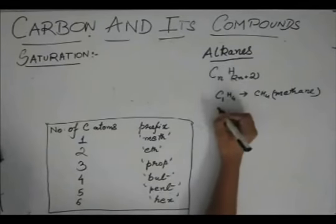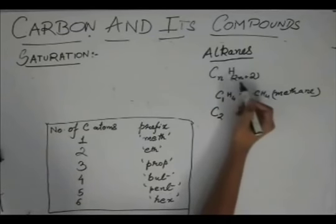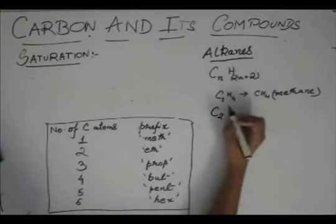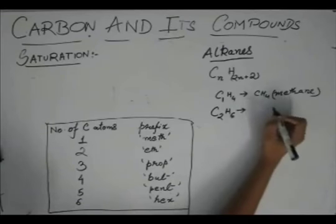If N is 2 over here, then hydrogen atoms will be 2N plus 2, so it gives C2H6 which is ethane.